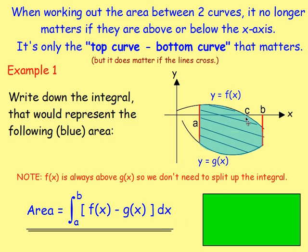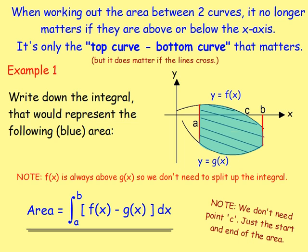One or two people are probably thinking: what is the point of c? Well, c is just showing us the point where f of x crosses the x-axis, but we don't need it. Remember, it no longer matters if they are above or below the x-axis, as long as you do top curve minus bottom curve. So we don't need that point c.